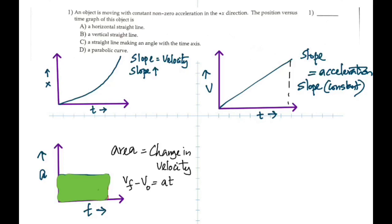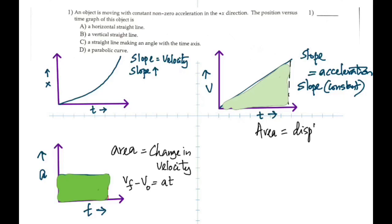That led me to think: what would the area of the velocity-time graph give you? The product of velocity and time is displacement. So the area of the velocity-time graph gives you displacement. The area of the position-time graph does not give you anything in particular, so don't worry about that.